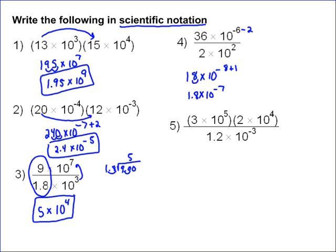Number 5 is a combination of the problems we've done. We need the numerator first: 3 times 2 gives you 6. 10 to the 5th times 10 to the 4th is 10 to the 9th, and that's over 1.2 times 10 to the negative 3rd.